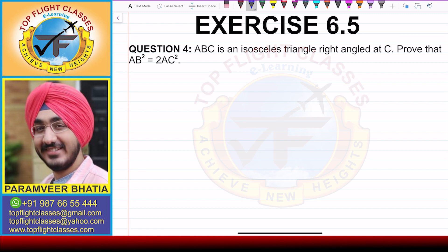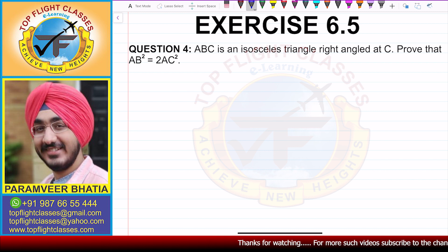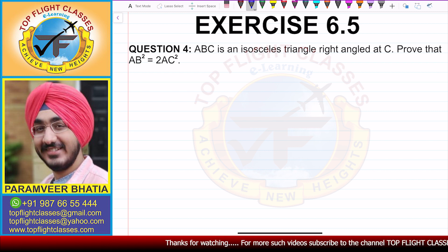In this video, we are going to solve question number 4 of exercise 6.5. Question number 4 says: ABC is an isosceles triangle right angled at C. Prove that AB square is equal to 2AC square.